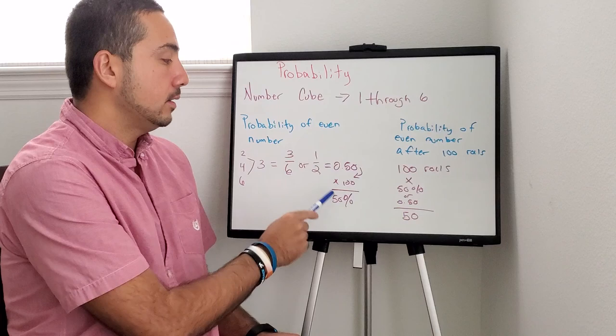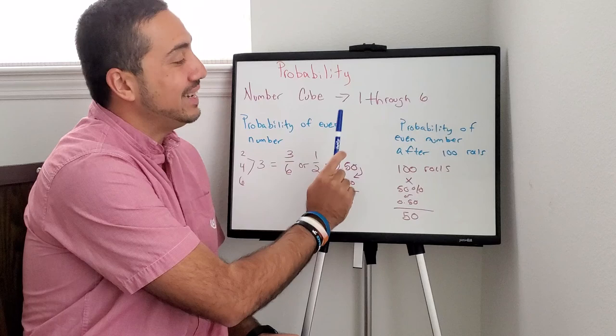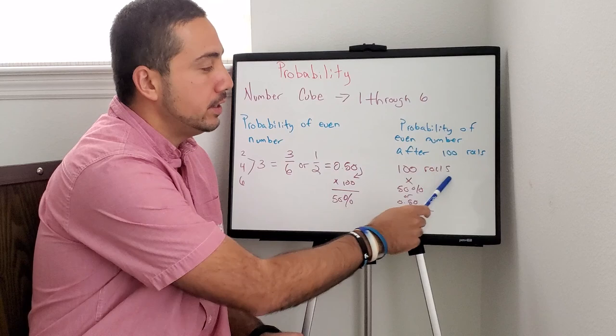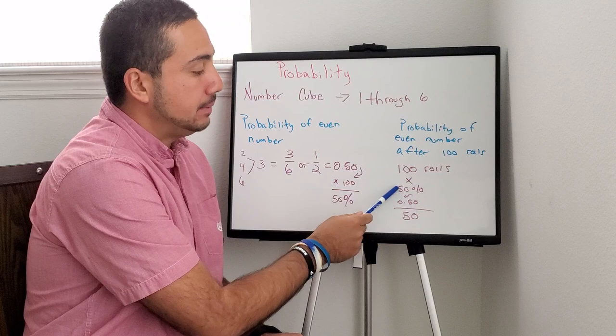What if I asked what's the probability of an even number after 100 rolls? What do you do? Well, this is what we do. 100 rolls times the percent. So 100 times 50% or 0.50. That equals 50.